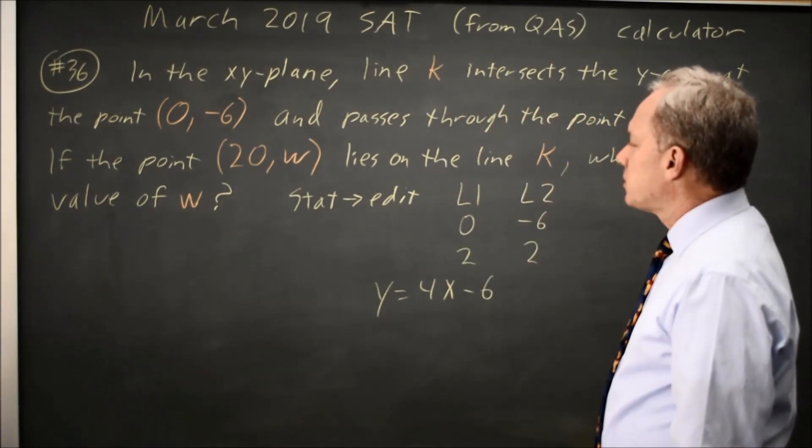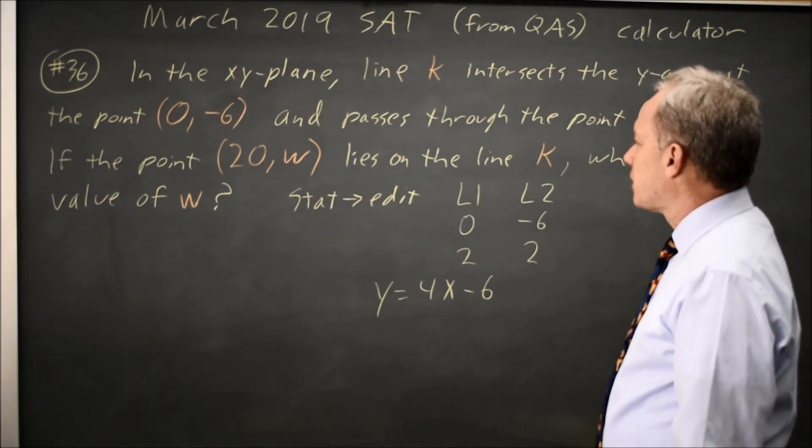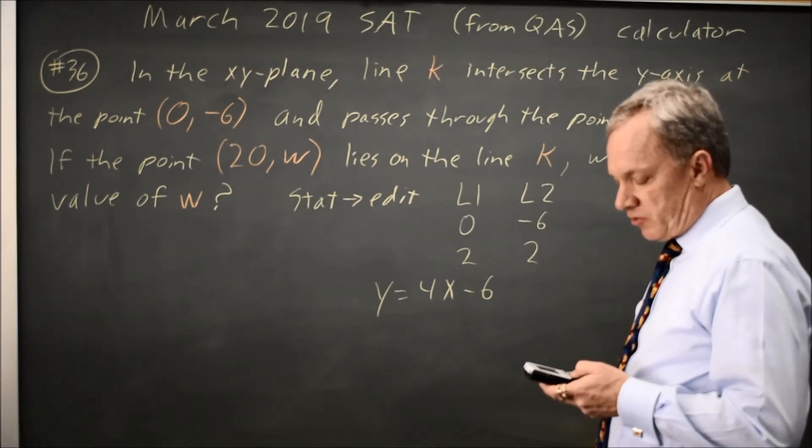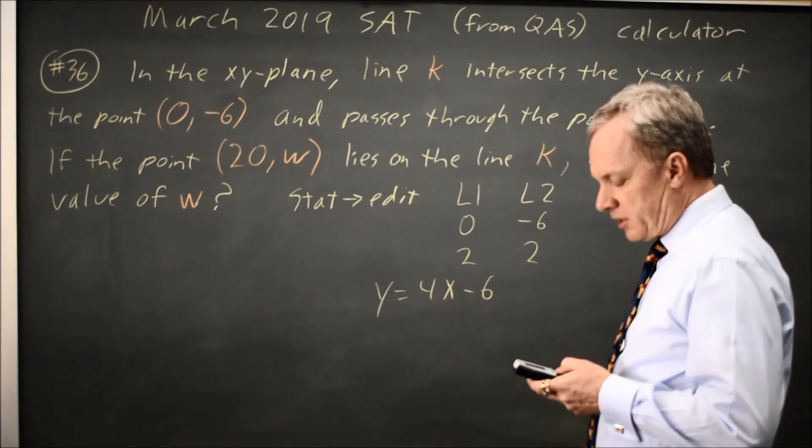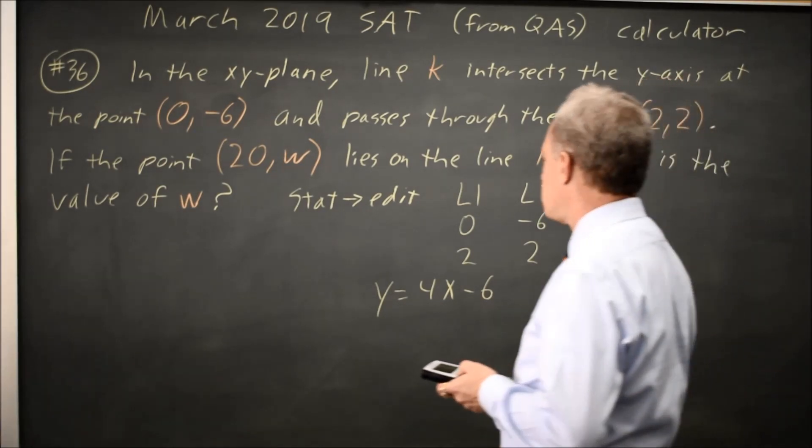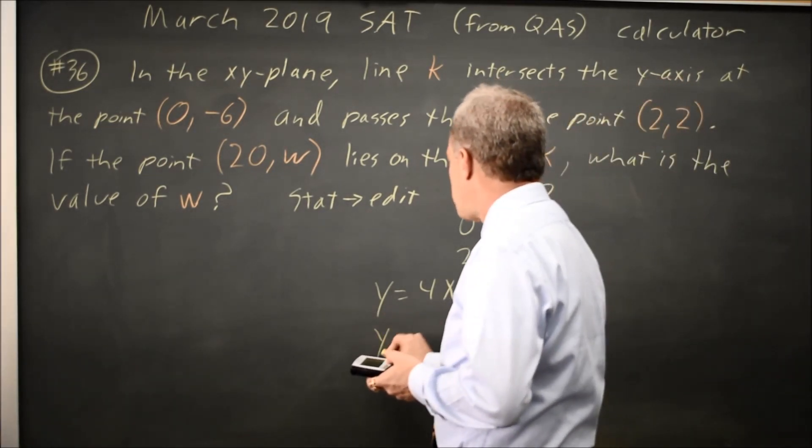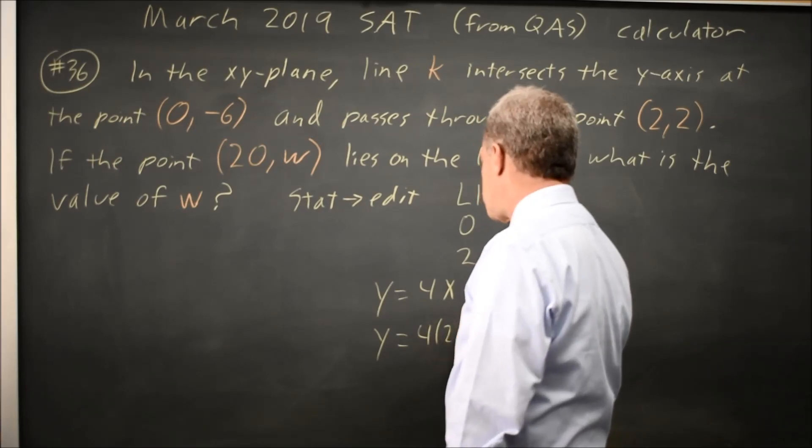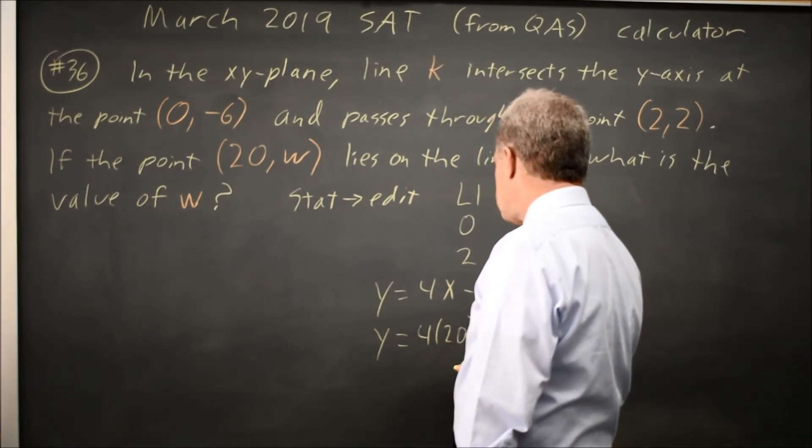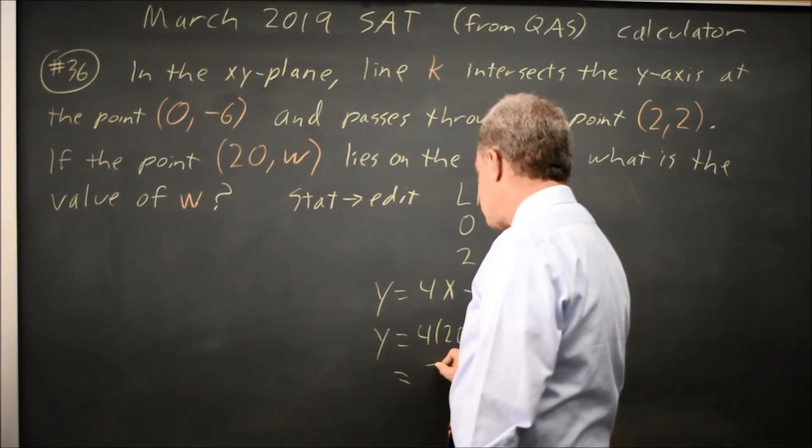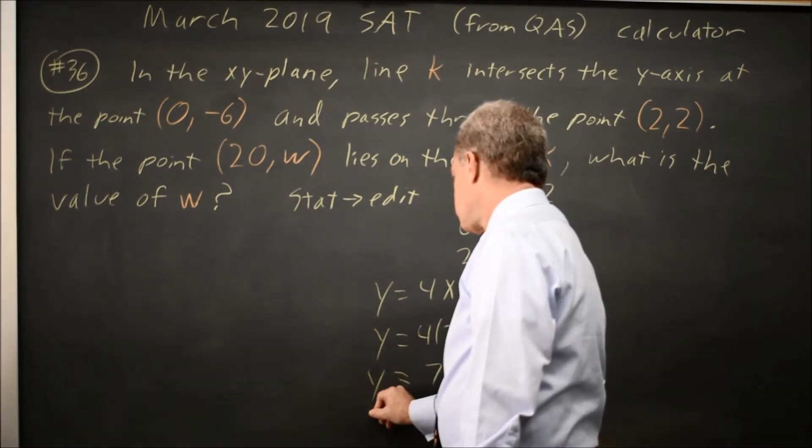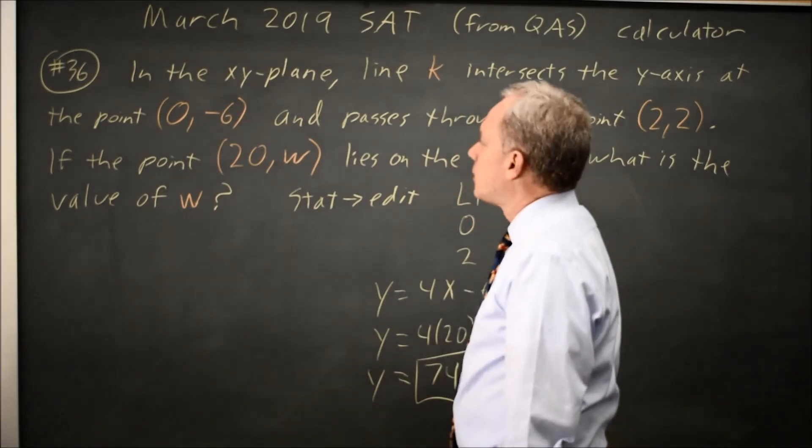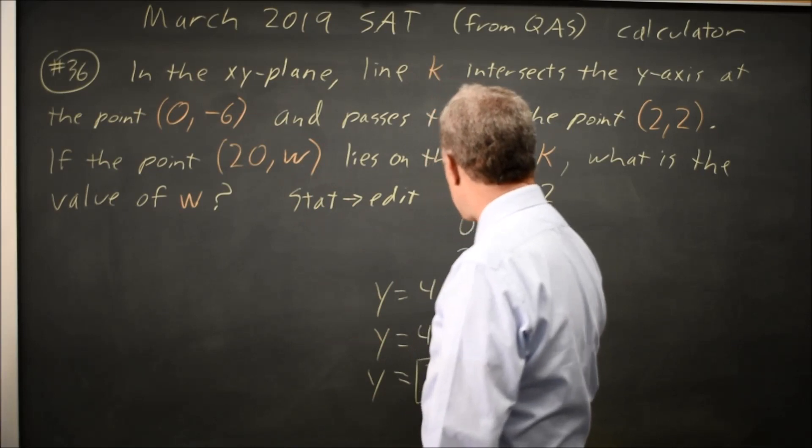So for the point x equals 20 I can find y, or if it's entered into y equals for me I can scroll down in the table to x equals 20 and my y value is 4 times 20 minus 6 which is 80 minus 6 is 74, which is what they're asking for that they're calling W.